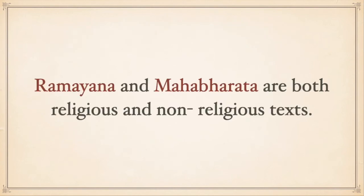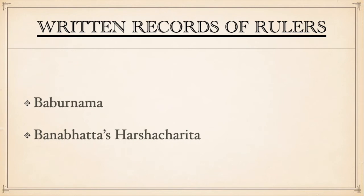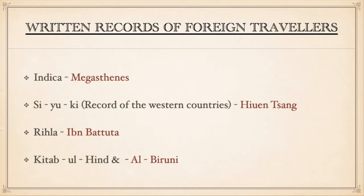Ramayana and Mahabharata are both religious and non-religious texts. Another type of literary source includes written records of rulers such as Baburnama, Banabhatta's Harshacharita, etc. Written records of foreign travelers include Indica written by Megasthenes, the record of western countries written by Xuanzang, Rihla written by Ibn Battuta, Kitab-ul-Hind written by Al-Biruni, and records of Buddhist countries written by Faxian, as well as geographic records written by Ptolemy.